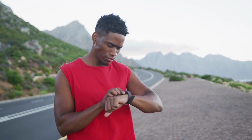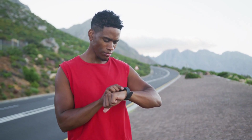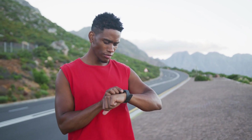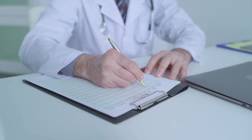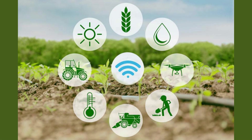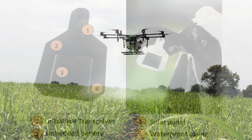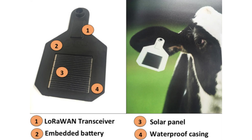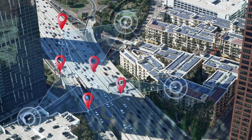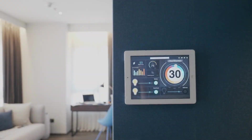Let's take a closer look at some real-world examples of how IoT is transforming different industries. In healthcare, IoT devices can monitor patients remotely, collect vital signs, and alert healthcare professionals in case of emergencies. In agriculture, sensors placed in the field can gather data about soil moisture levels and temperature, helping farmers optimize irrigation and reduce water waste.